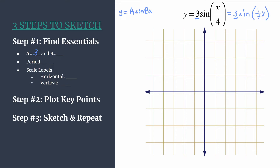b is going to be 1/4. b tells us two important pieces of information. First, it tells us how many cycles of our graph happen between 0 and 2π — so a quarter of a cycle will happen between 0 and 2π. That's something important to know, and we can confirm it at the end.